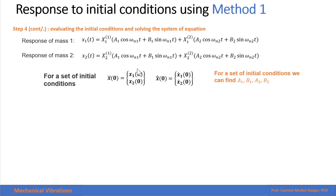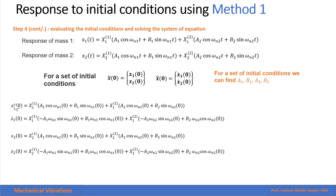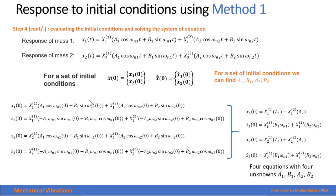Given initial conditions — initial displacement vector x(0) and initial velocity — we have four equations to find the four constants a1, b1, a2, and b2. The four equations are: the response of mass 1 at t=0, the velocity of mass 1 at t=0, the response of mass 2 at t=0, and the velocity of mass 2 at t=0. Using cosine(0)=1 and sine(0)=0, we get four equations with four unknowns.